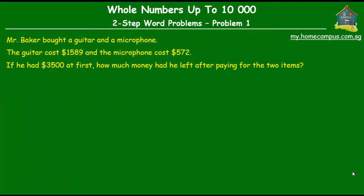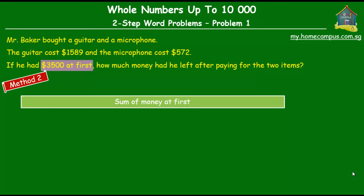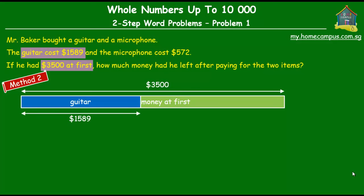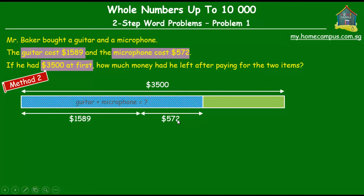That was Method 1. Now there's another method to solve this problem — Method 2. He had $3500 at first; the green unit represents $3500. From this money he spent a certain amount on the guitar and the microphone. We'll first find how much he spent altogether, then subtract that from $3500 to find how much money he had left in the end.